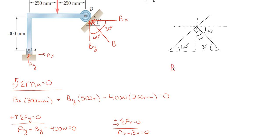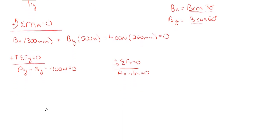utilizing the angles that are shown here. So B sub x is simply just B times the cosine of 30 degrees, and B sub y is going to be B times the cosine of 60 degrees. So what we can do now is that we can take this portion right here, B cosine of 30, B cosine of 60, and plug it into our moment equation for B sub x and B sub y. And that way, we only have one unknown in our moment equation, and we can solve for that.